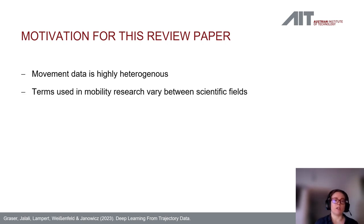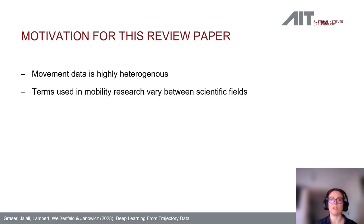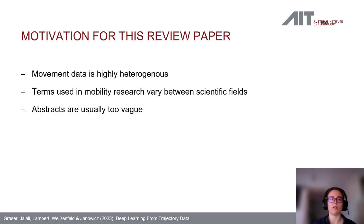Another challenge is that the terms used in mobility research vary a lot between different scientific fields, for example between computer science, geographic information science, geography, and urban planning. The same terms might be used to describe different things, and different terms might be used to describe the same thing, making it hard to search for papers on a certain topic.